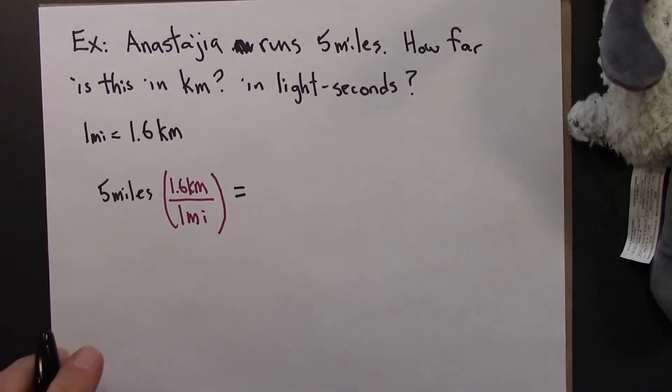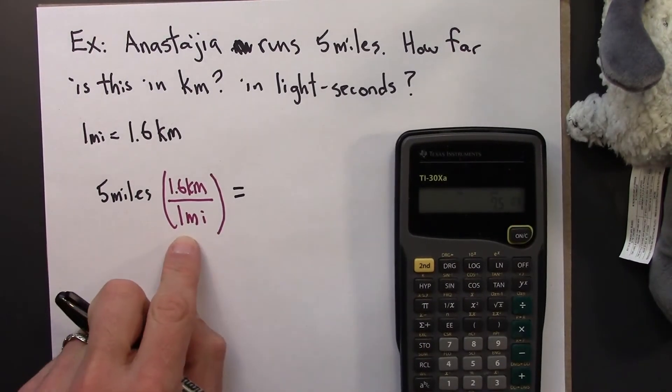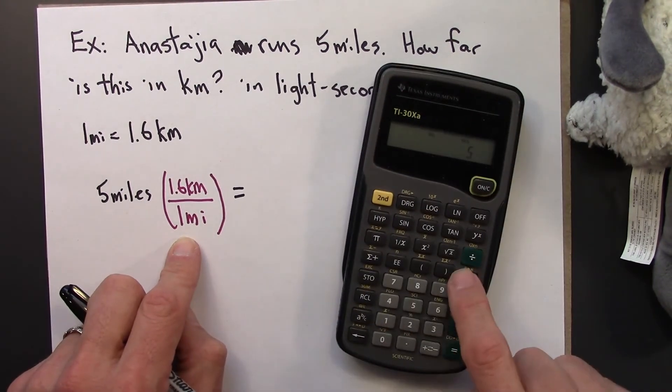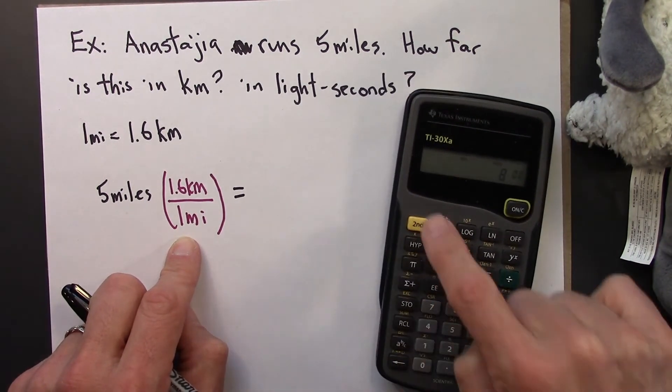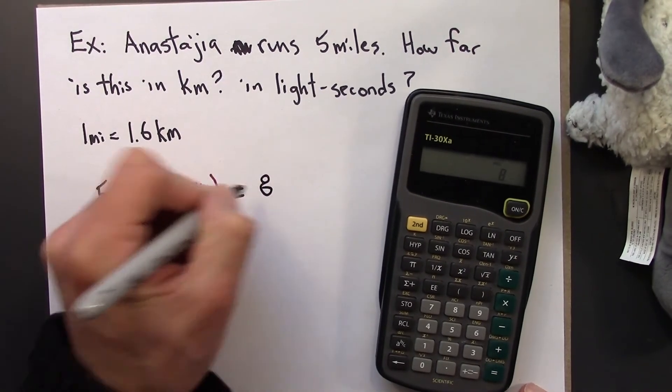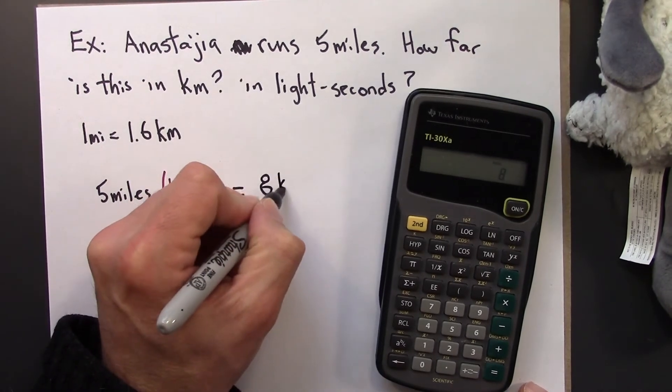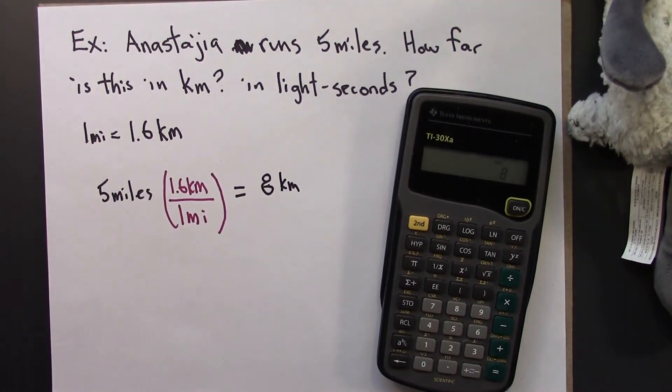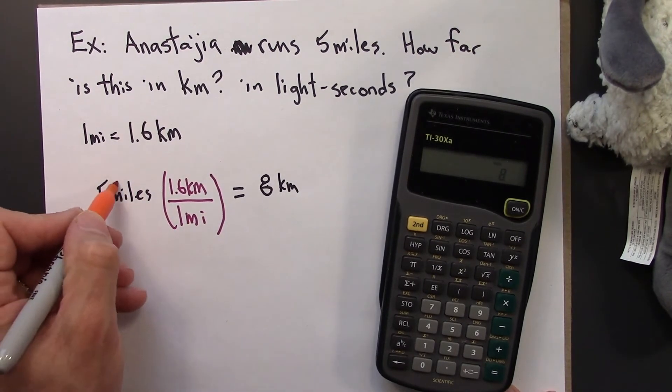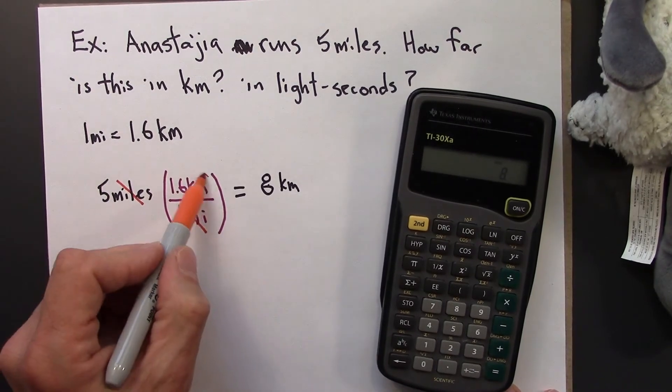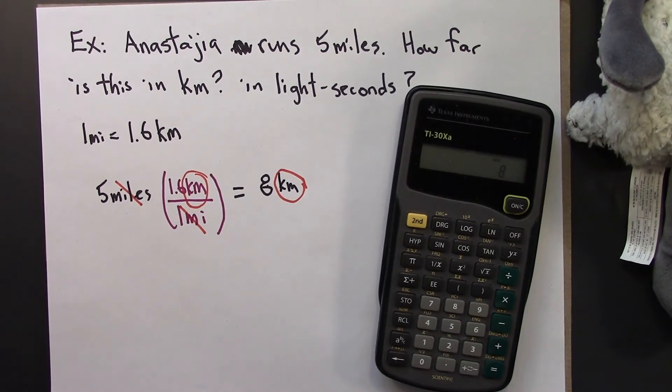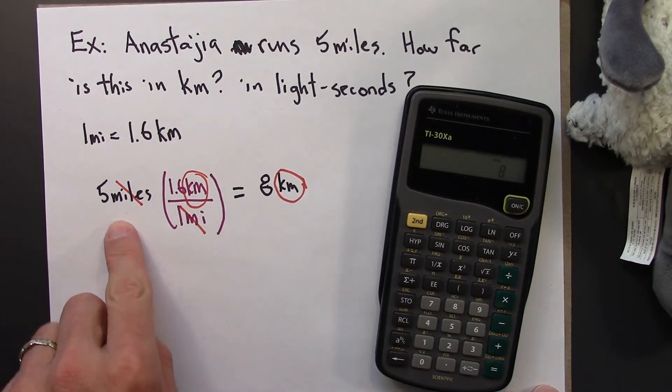So, I have 5 miles. I can multiply by my conversion factor, the number 1 in disguise. 5 times 1.6, and I get 8. And that has units of kilometers. Notice that the units cancel. Miles on top, miles on bottom. And so I'm left with kilometers. So that's a conversion from miles to kilometers.